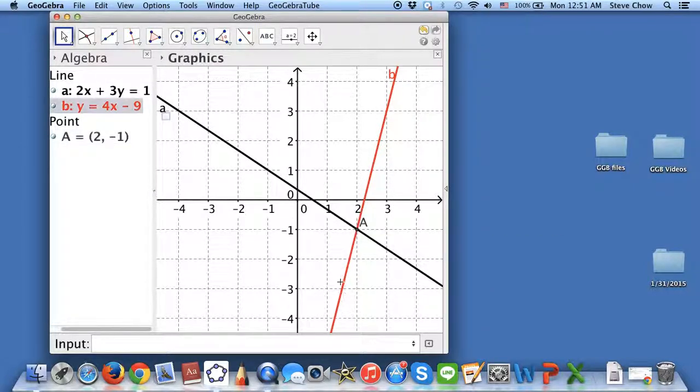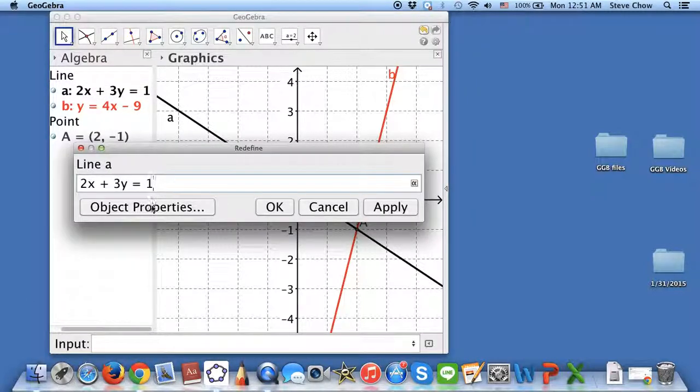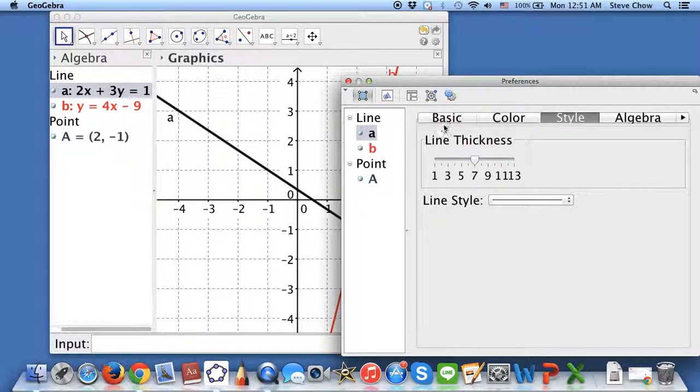Sometimes if you want to include this onto your test or your handout, you want to have the equation of the line. When you save this as a picture, this right here is not going to be included.